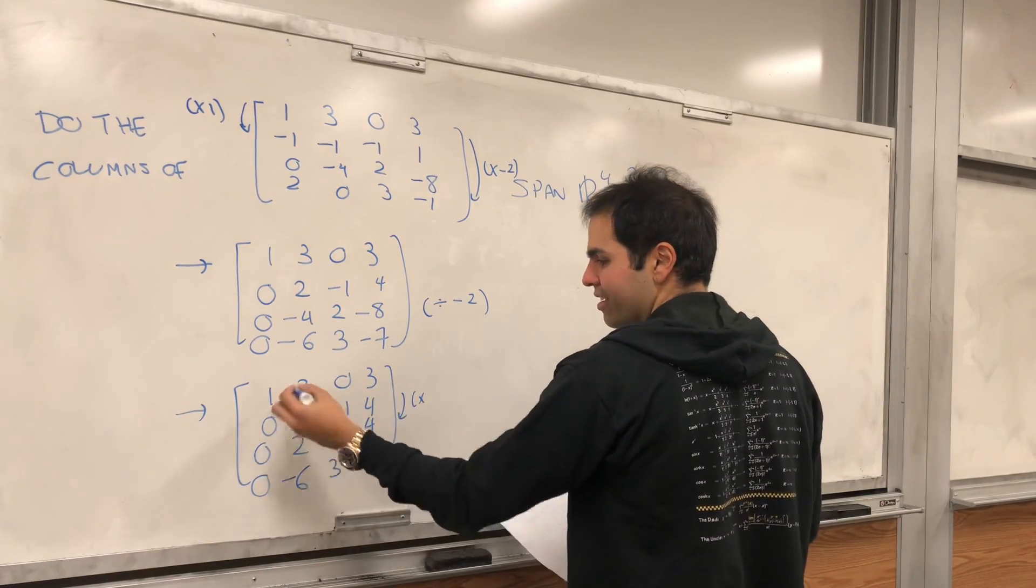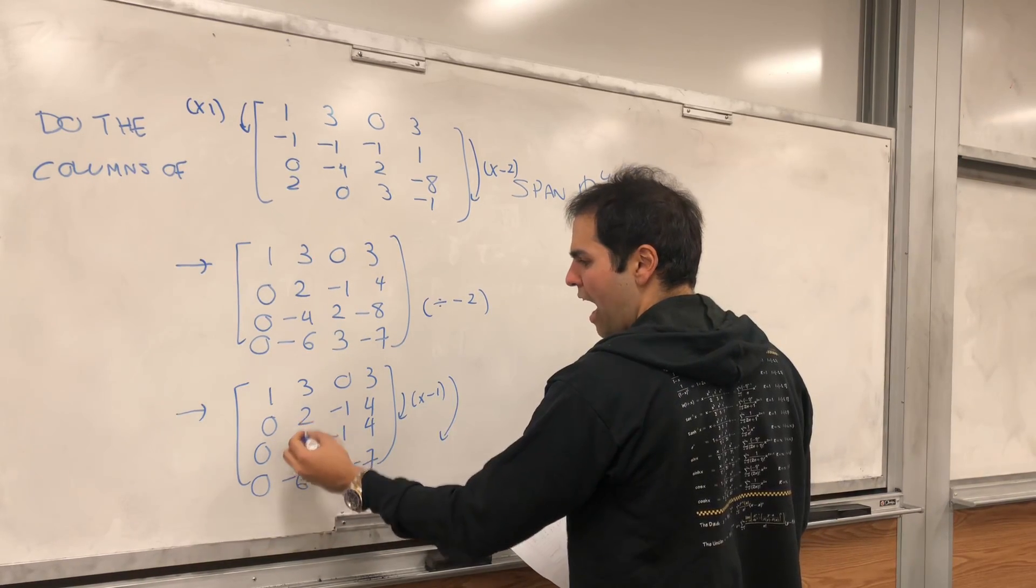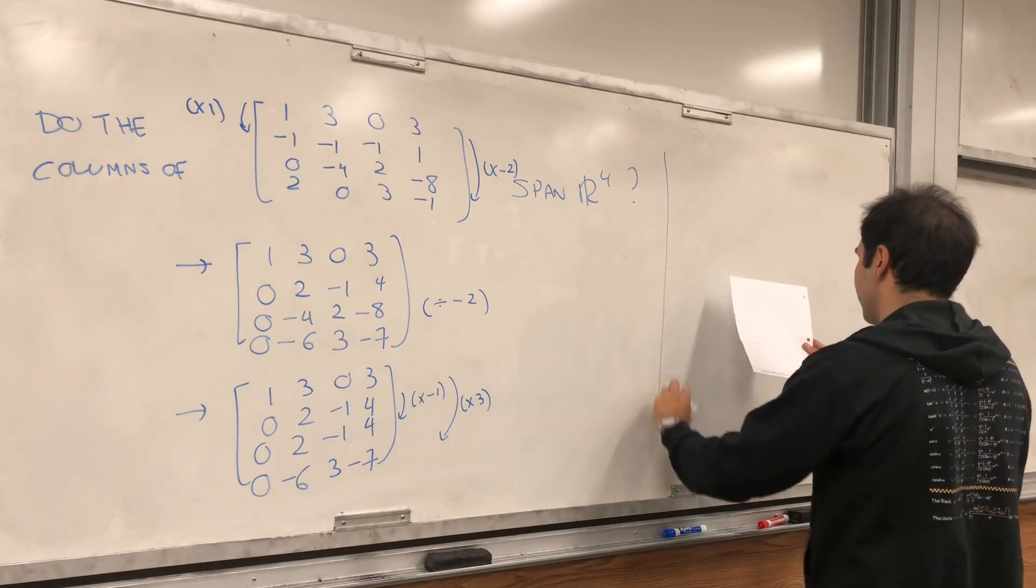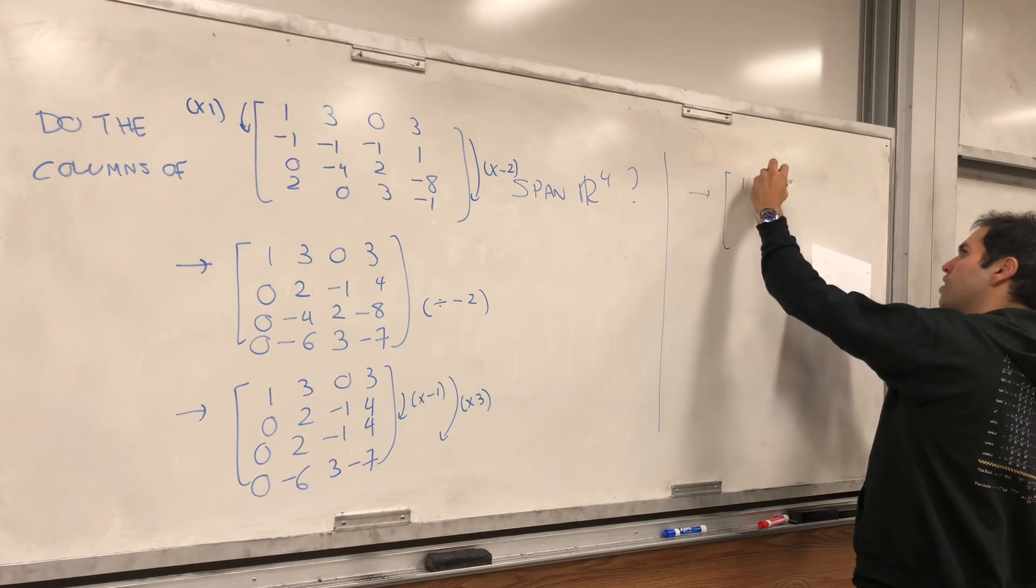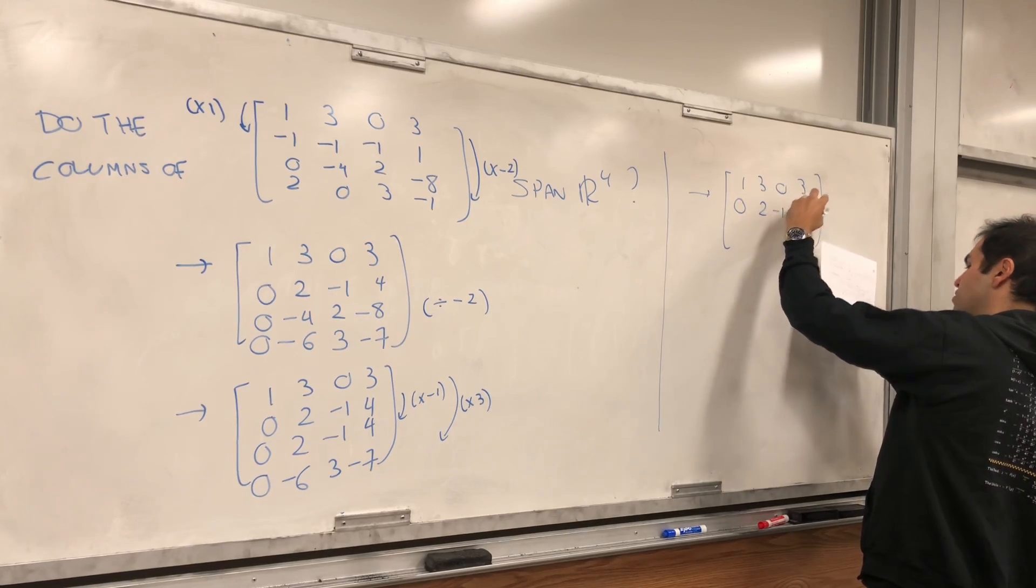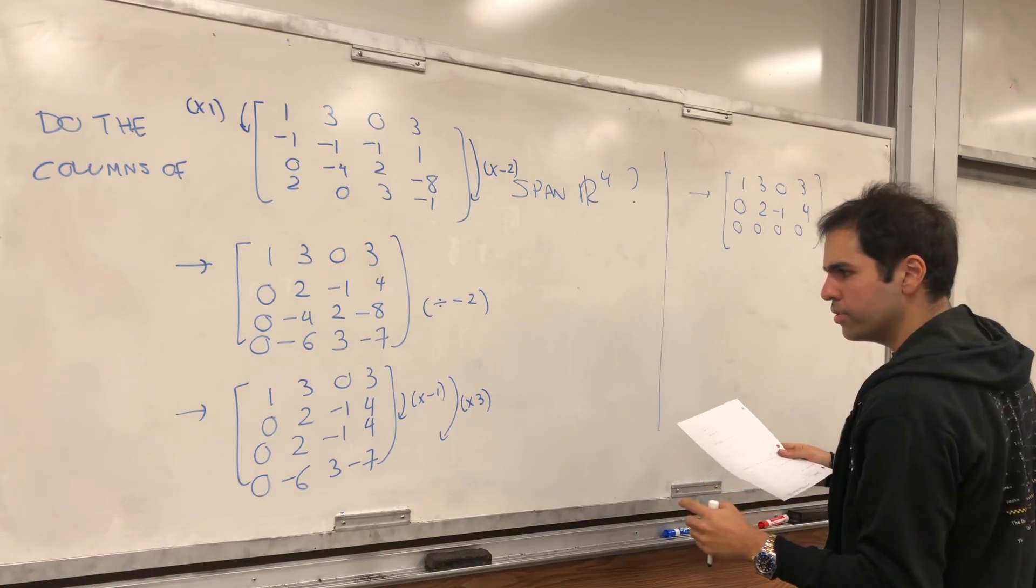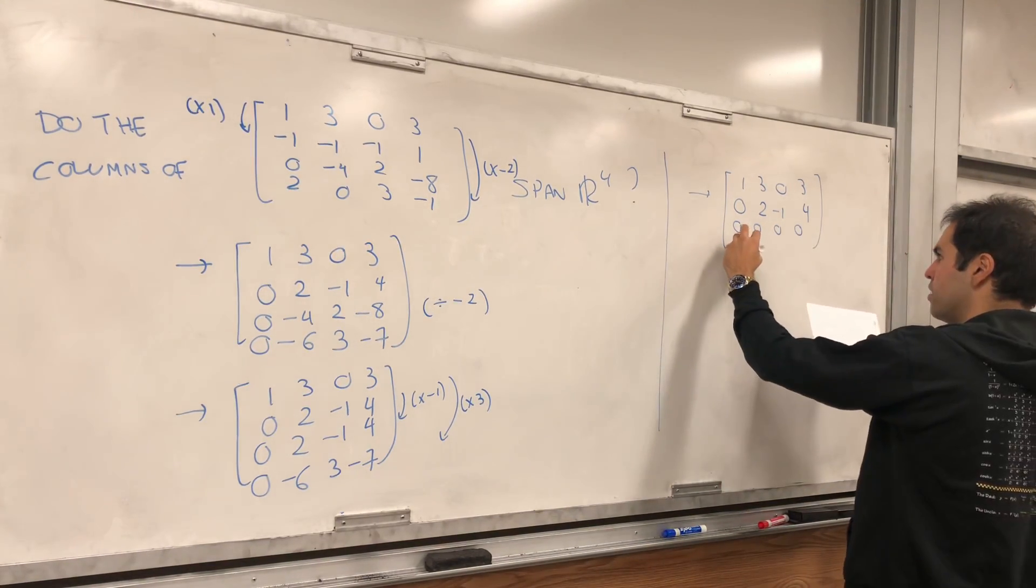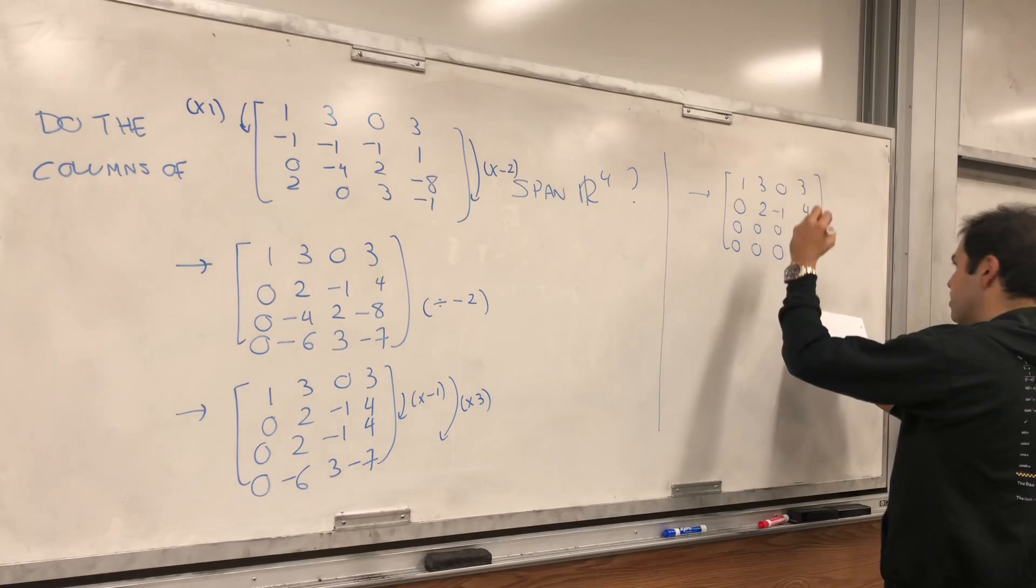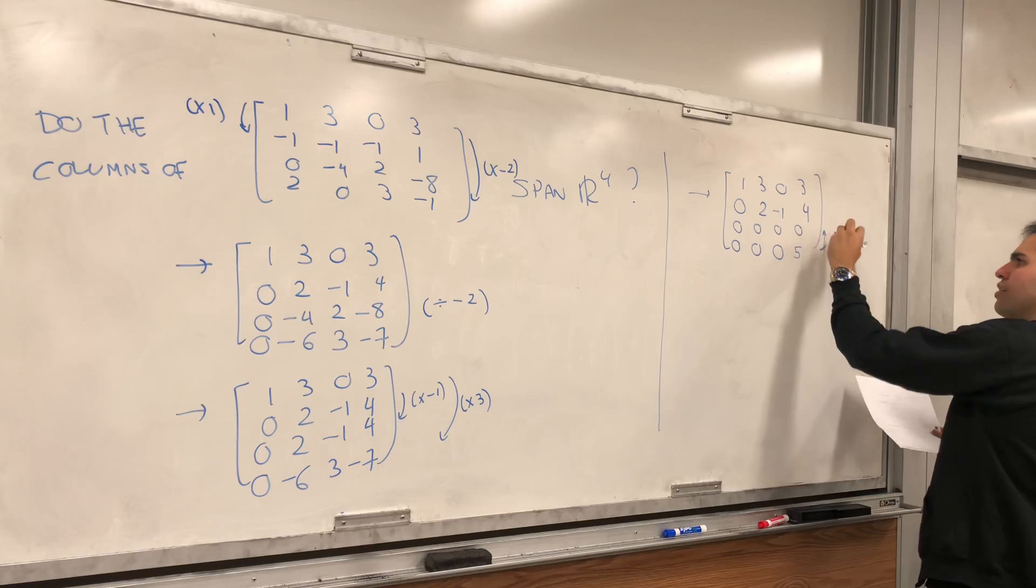And then there are a bunch of things you can do. You can subtract, of course, you can like erase this row basically, and you can like add three times this row to this row, zero, and then I believe what you get is one, three, zero, three, zero, two, minus one, four, and then zero, zero, zero, zero, and let's see, so zero, zero, zero, and so 12 minus seven, which is five.